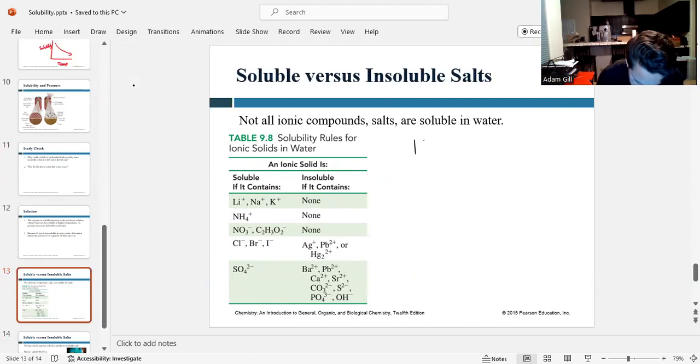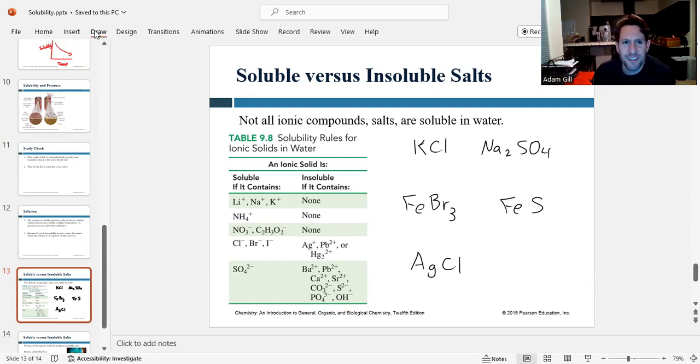So let's take a look at some common ionic compounds. Let's say we've got KCl versus Na2SO4 versus FeBr3 versus FeS versus AgCl. Okay, that's enough. So these are all different ionic compounds. You know they're ionic because they have a metal and a non-metal. But how can we predict whether or not these will dissolve in water? Well, let's take a look at our solubility table here.